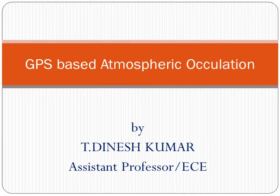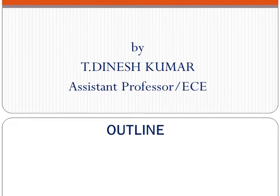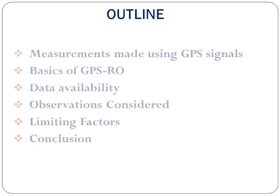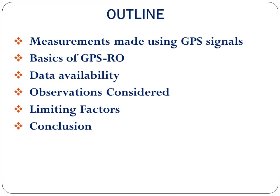Hi everyone, this is T Dinesh Kumar. In this video I am going to explain about the Global Positioning System based Atmospheric Occultation. The outline of this presentation is: measurements made using GPS signals, the basics of GPS radio occultation, data availability, observations being considered, the limiting factors for atmospheric occultation, and the conclusion.